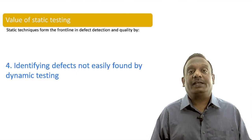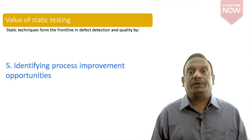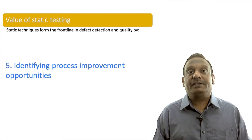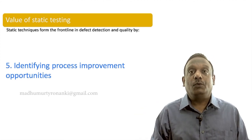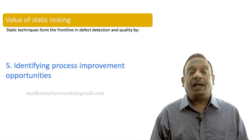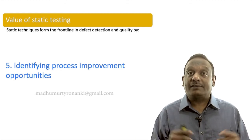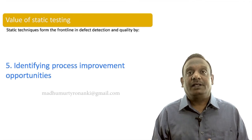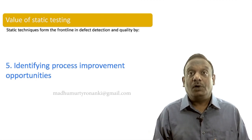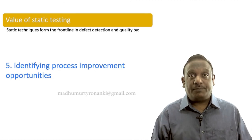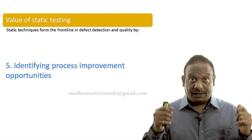The fifth value of static testing is identifying process improvement opportunities. Because static testing is done early and can be done on a variety of artifacts, we can observe what common mistakes people are making and why. Maybe the process used to make those artifacts is wrong — people may not be applying the right checklists, may not have the right process definition, or may not have been trained to apply the process correctly. By observing common problems, you can identify process improvement opportunities.